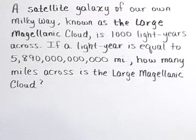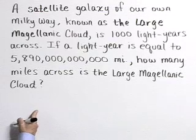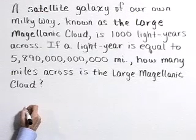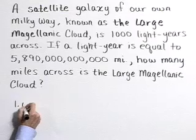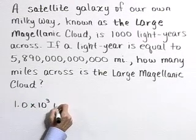Well, we're given that this Magellanic Cloud is 1,000 light-years. So let's start there and let's write that in scientific notation as 1.0 times 10 to the third light-years.